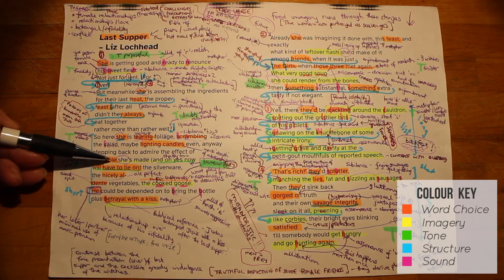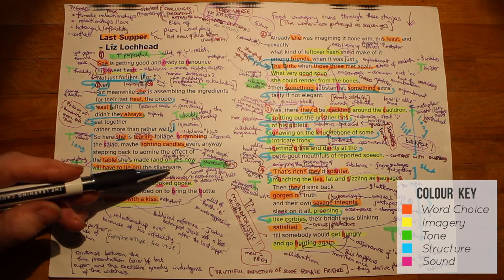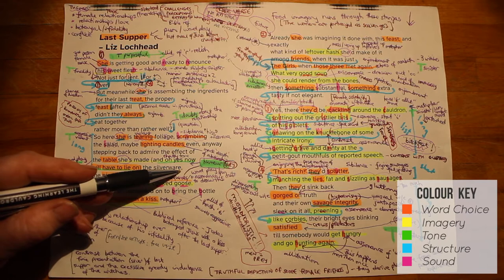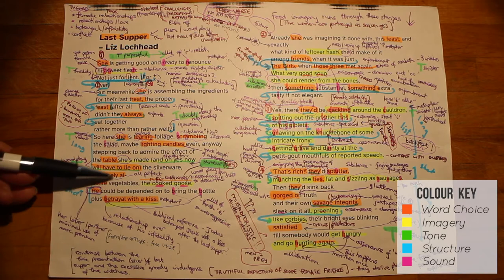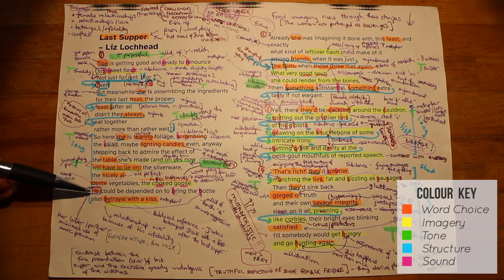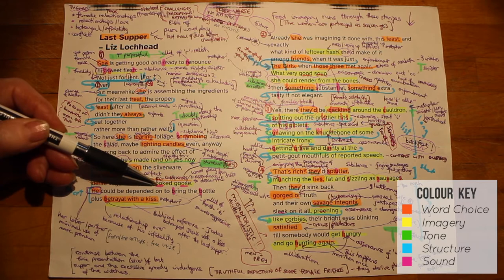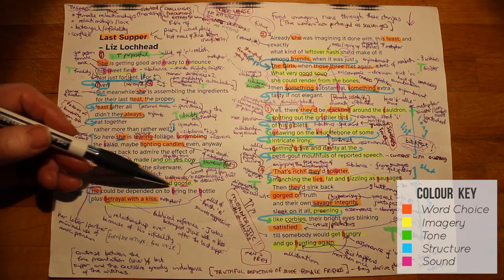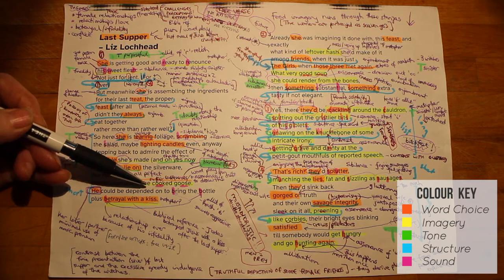There's a reference to silverware, which suggests she's taken out the best dinner service in order to create the right atmosphere for this meal, and yet we already have the impression it's not going to be the sort of romantic meal that you would anticipate. She refers to the perfection of the way she's cooked the vegetables. Nicely al dente. Look at the enjambment over there. The cooked goose is also worthy of our attention here, not only because of the assonance of the ooh and ooh sound, which draws our attention to it, but the fact that there's both a literal meaning and a figurative meaning. If someone cooks your goose, it means they set you up to fail effectively and suffer consequences, but she may literally also have been preparing a cooked goose.